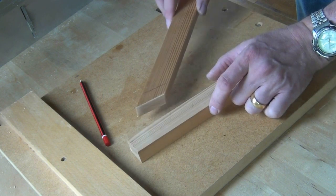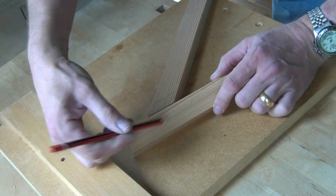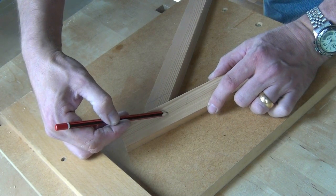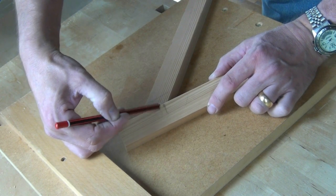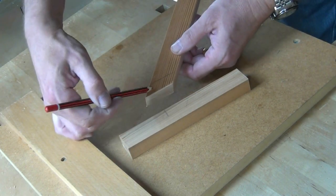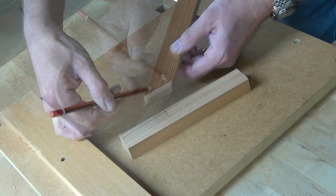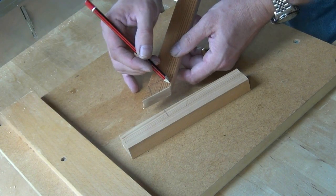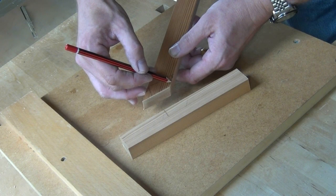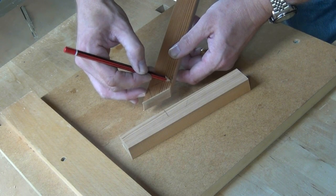So what we do is we cut this end of the mortise square to the edge and we square off the tenon. I also like to square off this end to some degree, like so.